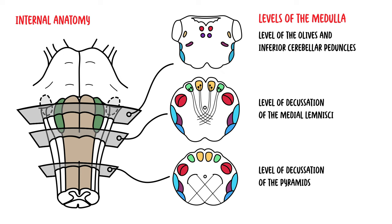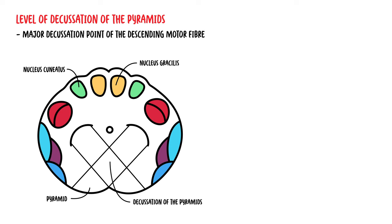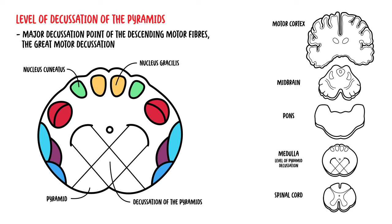Some also say there is a fourth level just below the pons, but we won't discuss that. First, we will discuss the most distal level of the medulla: the level of decussation of the pyramids, which is continuous with the spinal cord. As the name suggests, this level is the major decussation point of the descending motor fibers, because the pyramids carry motor fibers from the brain to the periphery.